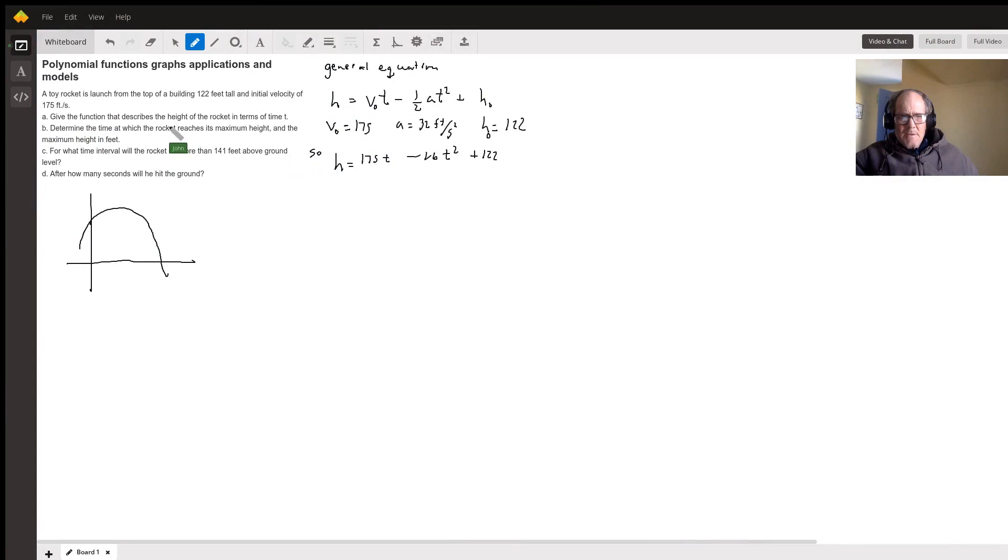Okay, the basic height parabola formula here is h equals v₀ initial velocity times time minus one-half at squared plus initial height.